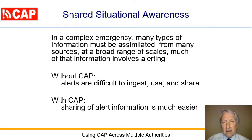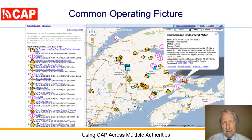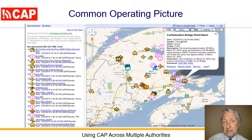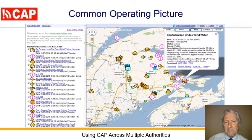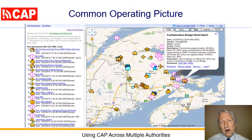With CAP alerts, information gathering and analysis is much easier. Use of CAP supports the emergency management function called shared situational awareness for maintaining a common operating picture. Here we see CAP alerts being displayed on a map interface, and maps like this help audiences understand complex or evolving emergencies.